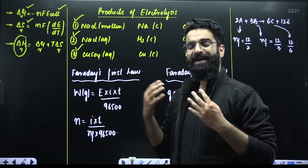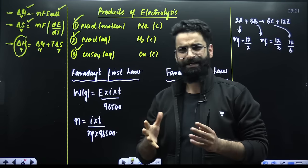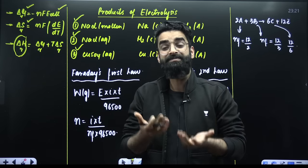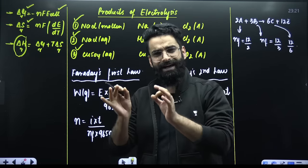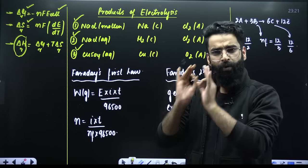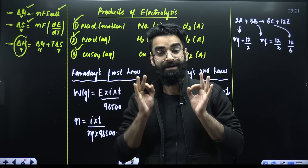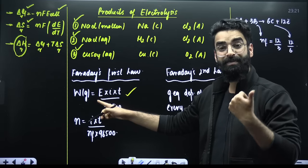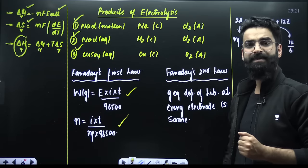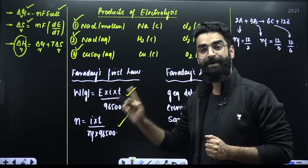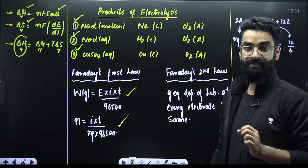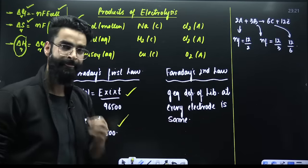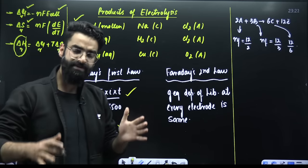Faraday's first law of electrolysis states that the amount of substance deposited or liberated at an electrode is directly proportional to the charge passing through the solution. The formula for mass deposited is: m = (E × I × t) / F, where E is the equivalent mass, I is the current, and t is the time. You can also calculate moles of substance deposited using this result.